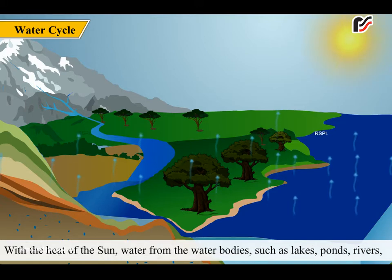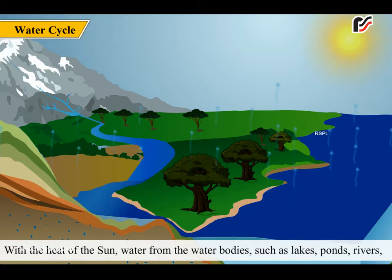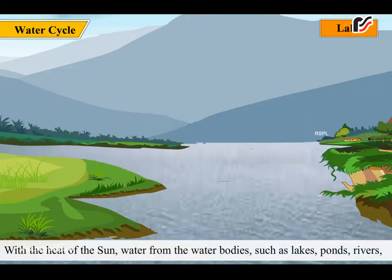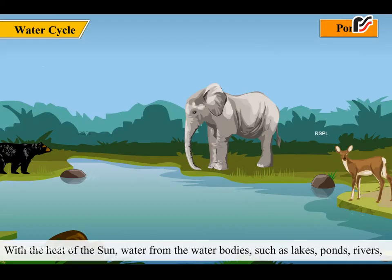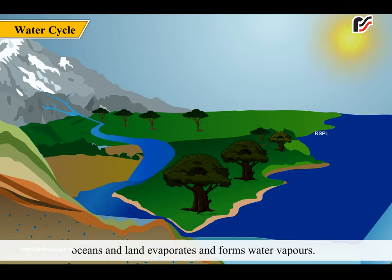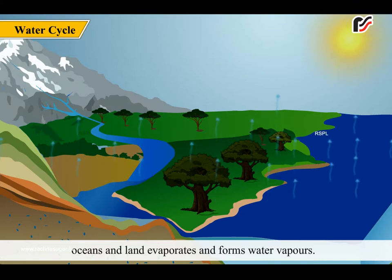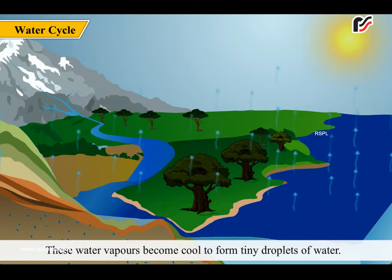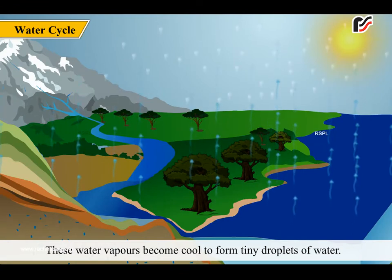With the heat of the sun, water from the water bodies such as lakes, ponds, rivers, oceans and land evaporates and forms water vapors. These water vapors become cool to form tiny droplets of water.